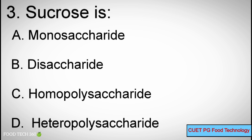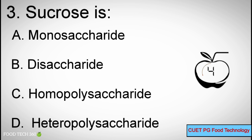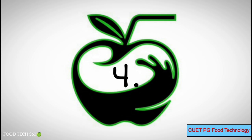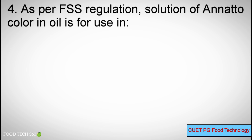Question Number 3: Sucrose is — Options A: Monosaccharide, B: Disaccharide, C: Homopolysaccharide, D: Heteropolysaccharide. Correct answer: B, Disaccharide.